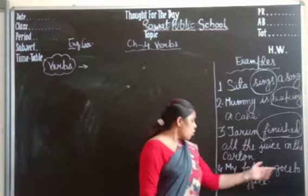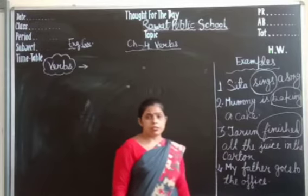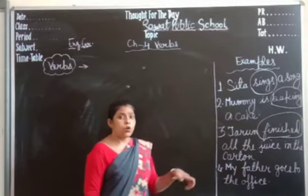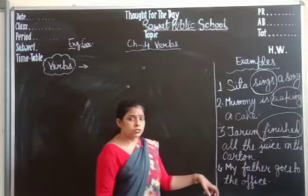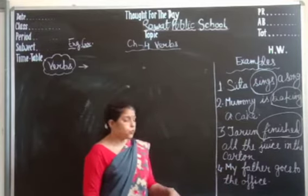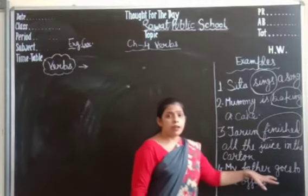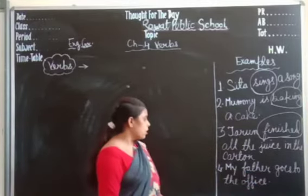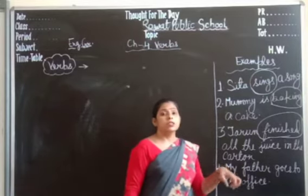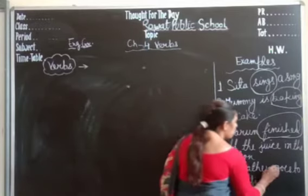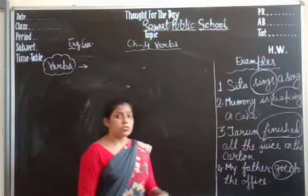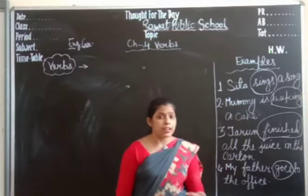The fourth sentence is: My father goes to the office. So what verb does my father do here? He goes to the office. Goes — that is the action word here.